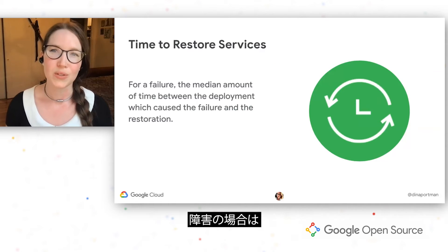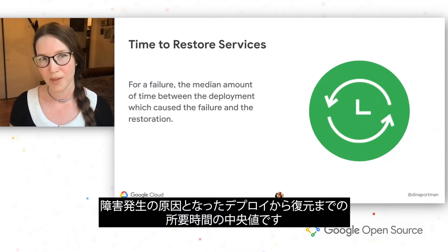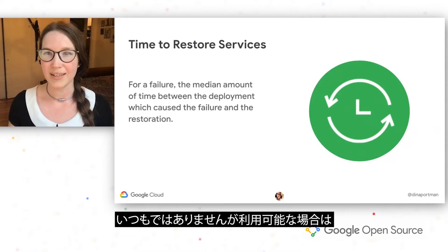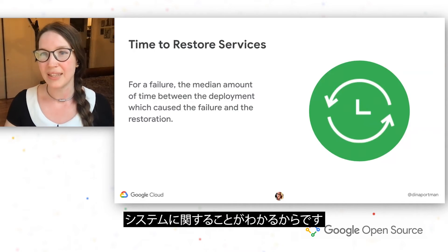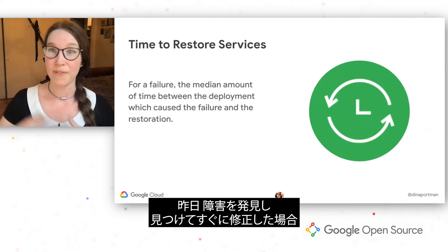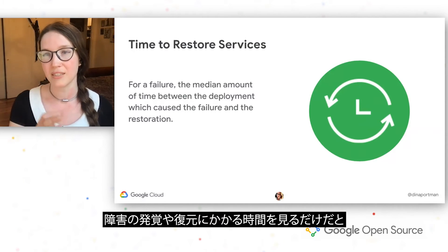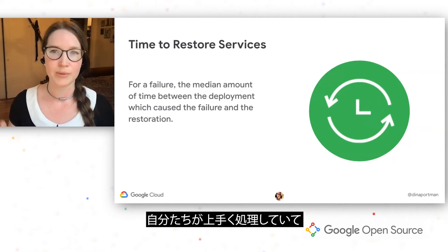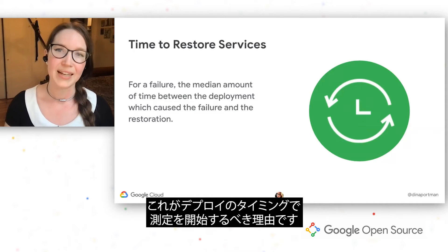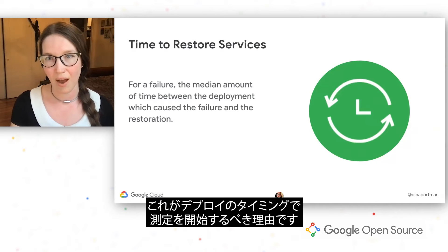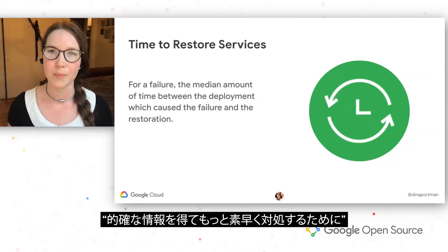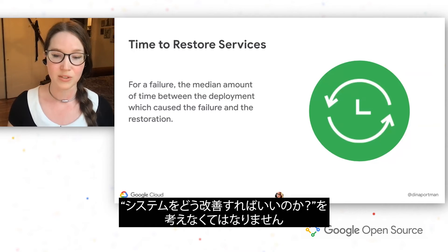Next, we have time to restore service. For a failure, this is the median amount of time between the deployment which caused the failure and the restoration. We want to look at the actual deployment of the failure rather than the detection of it, because it's not always available. But if it is available, this tells us something about our system. If there was a failure affecting our users for a month, but we just found it yesterday and fixed it really fast once we found it — if you just looked at the time of detection to the time of restoration, we would think we were doing a great job. But for all of these metrics, we're really considering how our users are experiencing our software delivery. That is why the time of deployment is a better place to start that clock — we have to think about how we improve our system so that we're able to better get that information in and to act on it more quickly.